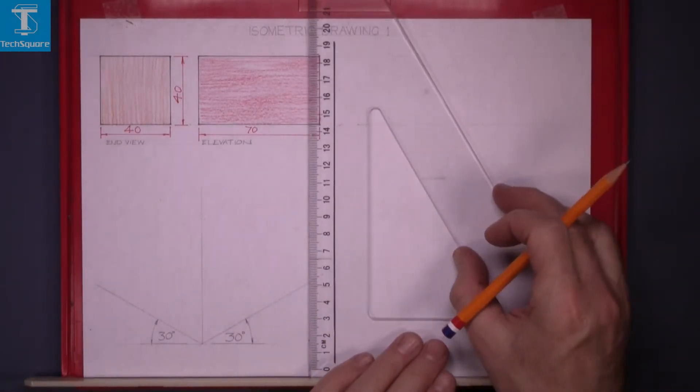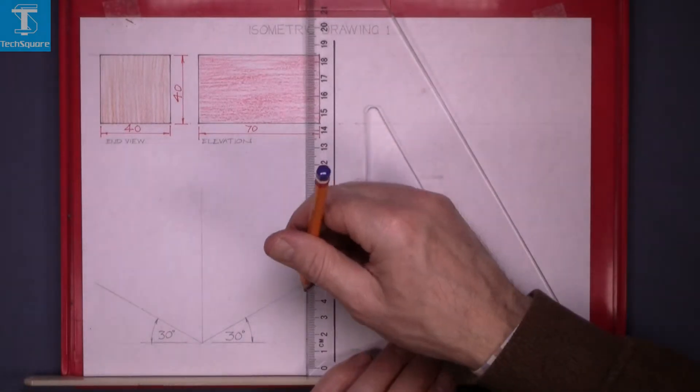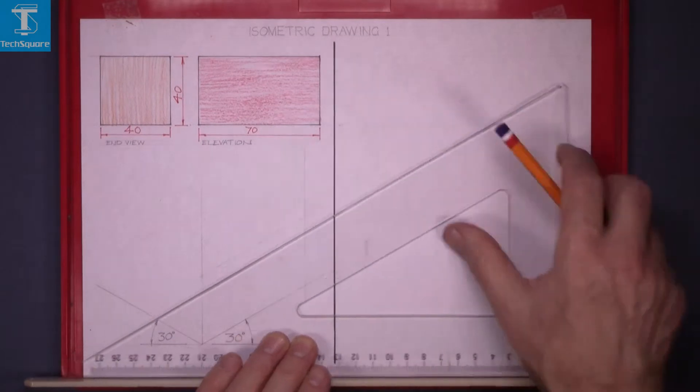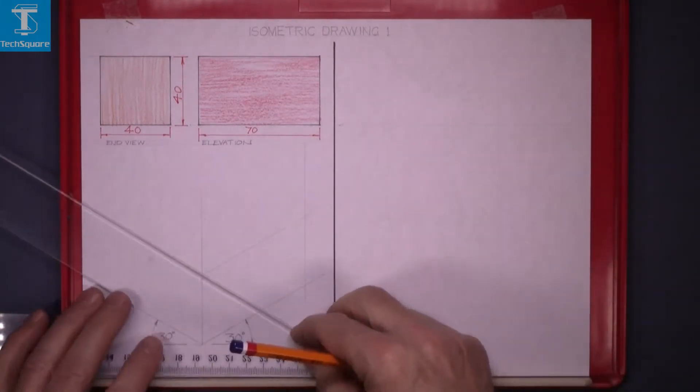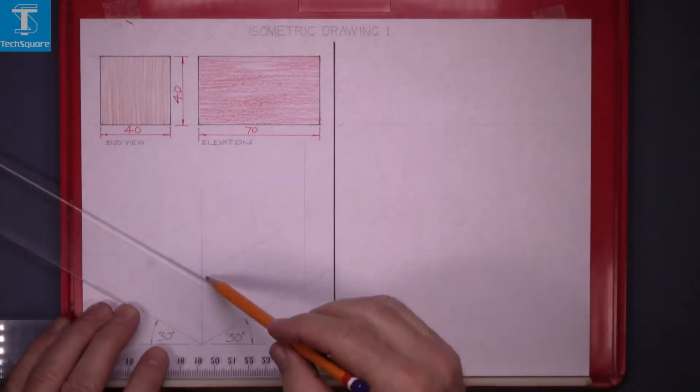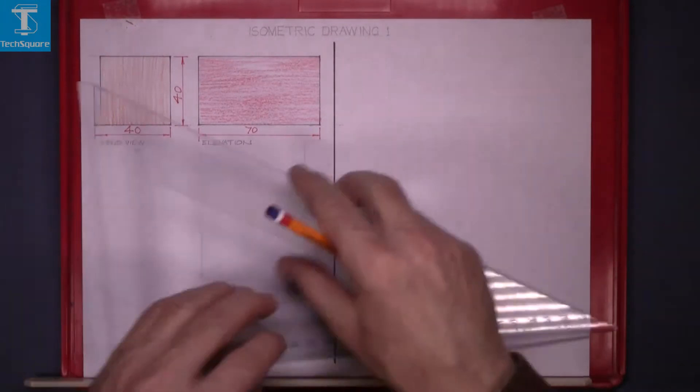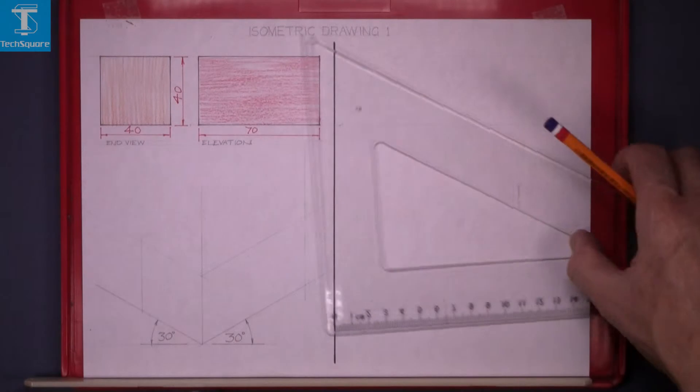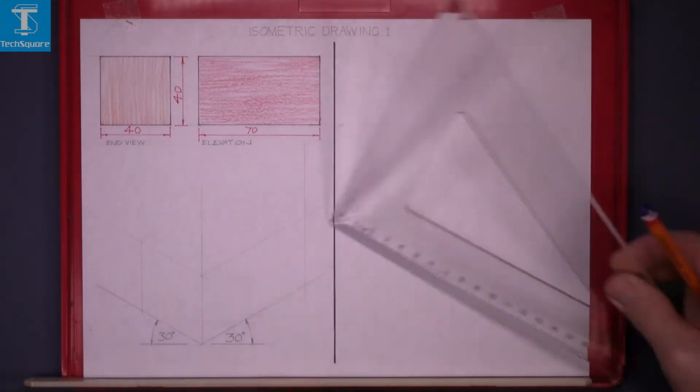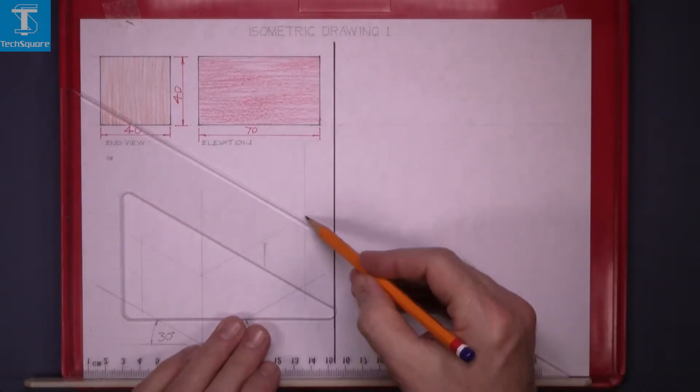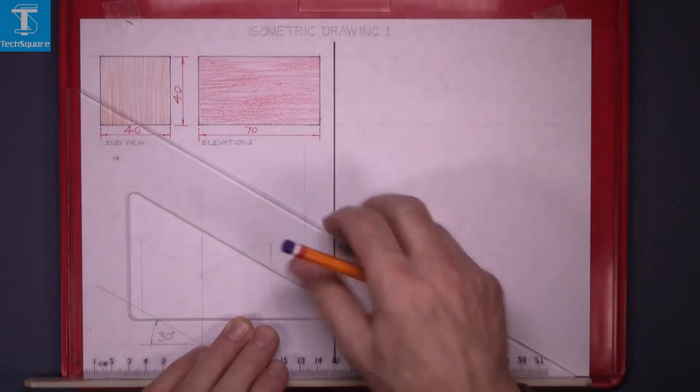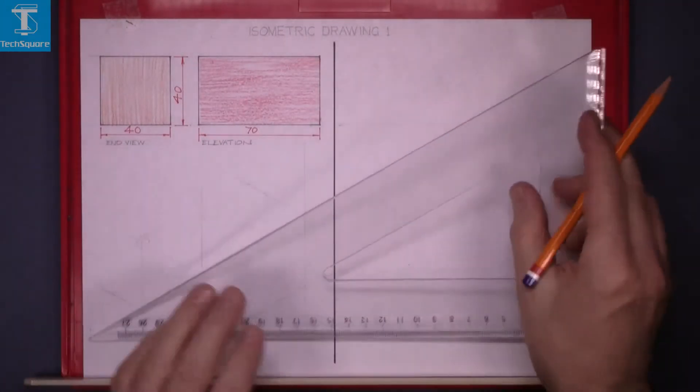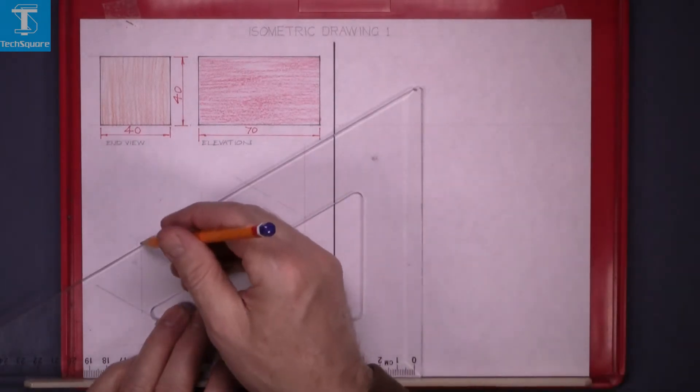And draw those lines vertically up and now back at 30 degrees here and 30 degrees back in the opposite direction. And then vertically up and now to get the back end of the piece go back at 30 degrees there and from this point back that direction.